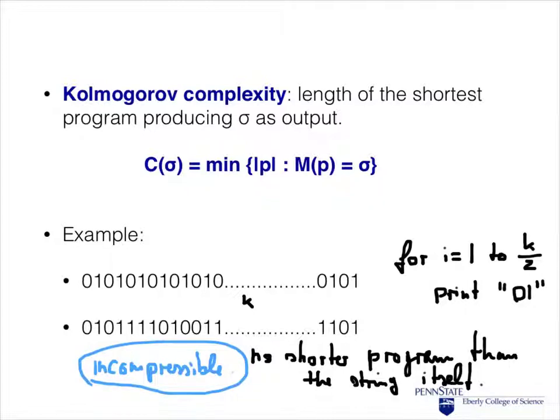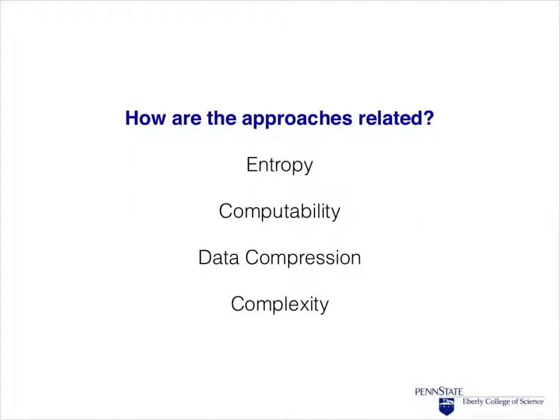Here we encounter the idea of measuring information by data compression. And the central goal of this course is to find out how entropy relates to data compression. How the combinatorial and probabilistic approaches are related to the algorithmic approach, based on computability and data compression. As we will see, there are many interesting connections. There are a lot of interesting questions, a lot of interesting mathematics happening. And I hope you found this introduction interesting, that it made you curious to learn more about it. I hope you will join the class and I'll see you in January.